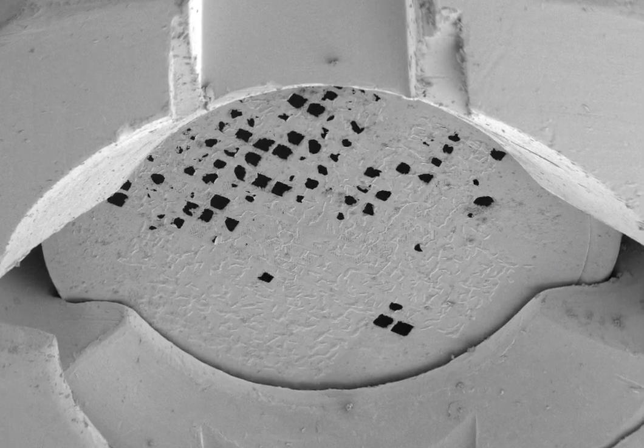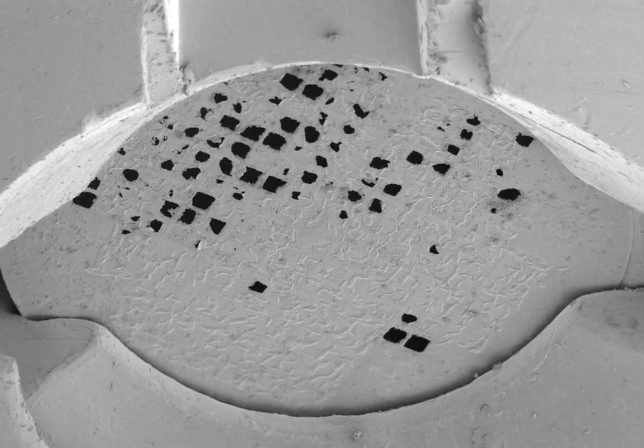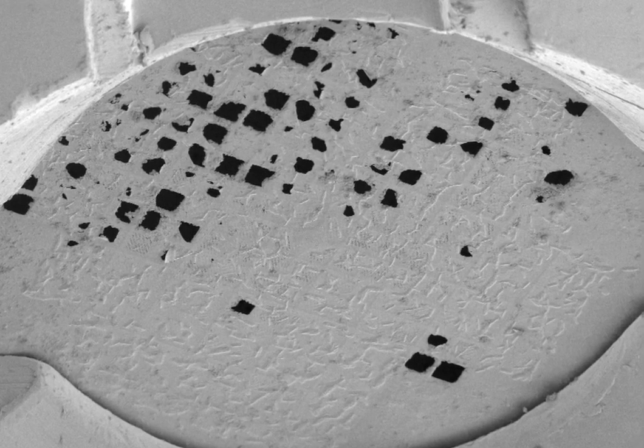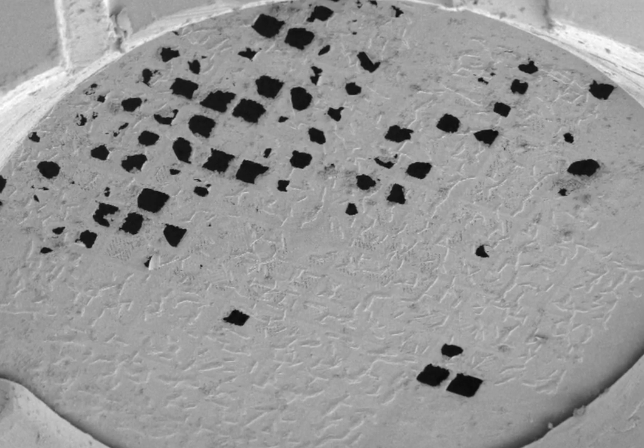Cells that were plunge frozen directly on EM grids were sputter coated with platinum to improve milling properties, and then they were transferred into a dual beam scanning electron microscope and focused ion beam mill equipped with a cryo stage.